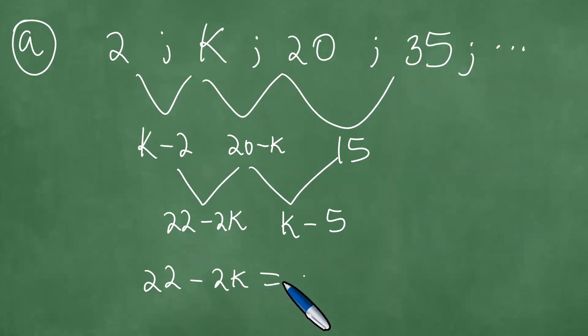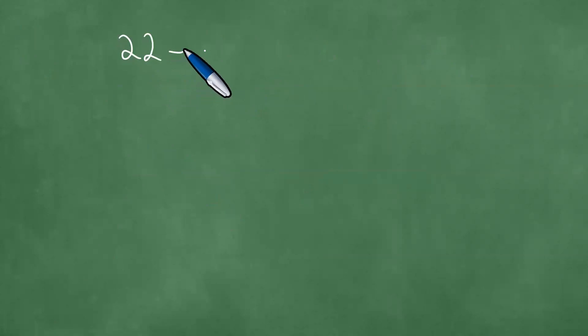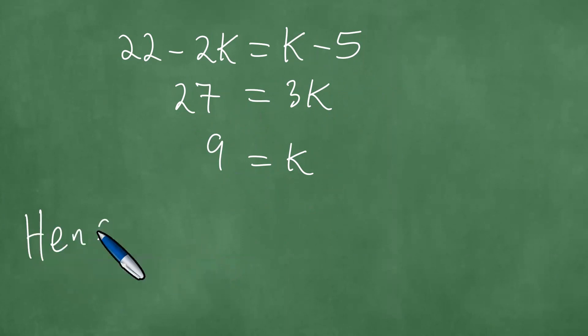In other words, 22 minus 2k must be k minus 5. Which means, therefore, what we have here is that 22 minus 2k is equal to k minus 5. So that when we have 3k, it is exactly the same as 27. Dividing both left and right by 3, we have that k equals 9. Hence k equals 9.